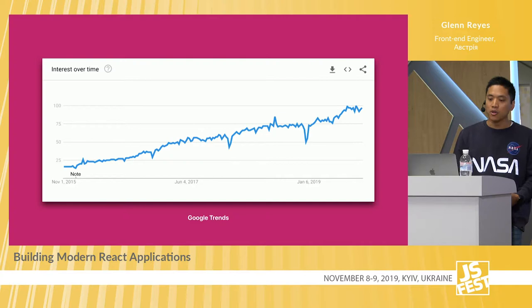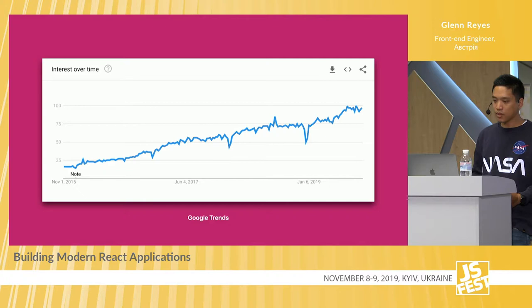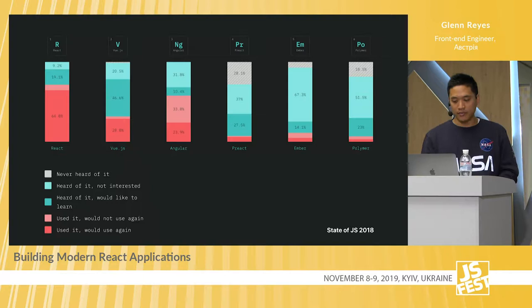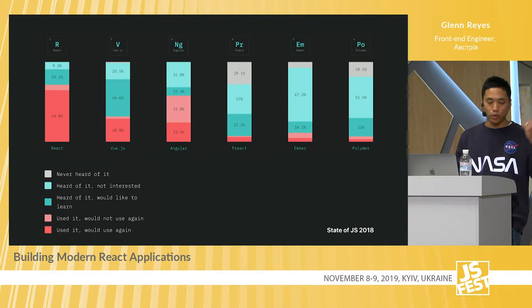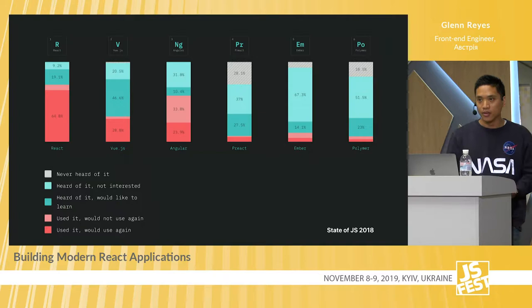It's no wonder that React is constantly growing and getting even better. The developer satisfaction results from the State of JS 2018 survey show a comparison of React with other popular front-end frameworks. The red bar represents people who have used it and would use it again — React is at around 65%, with almost a third of people who've used it wanting to use it again. So you're even more than that — it's really cool.